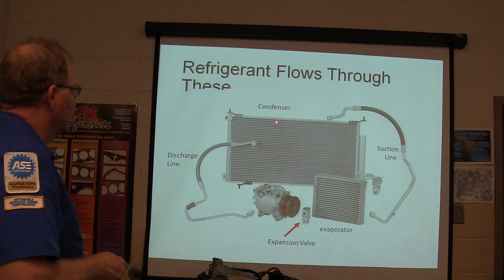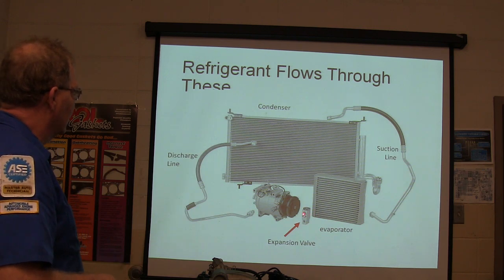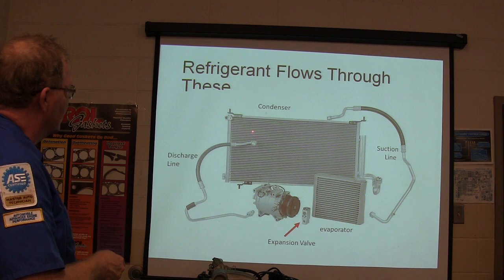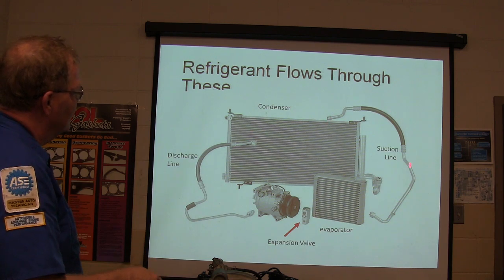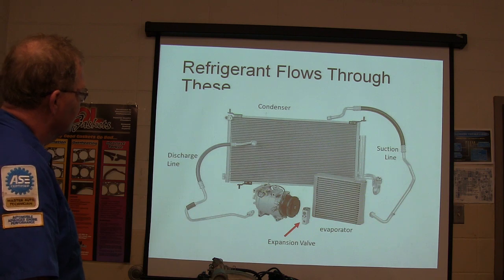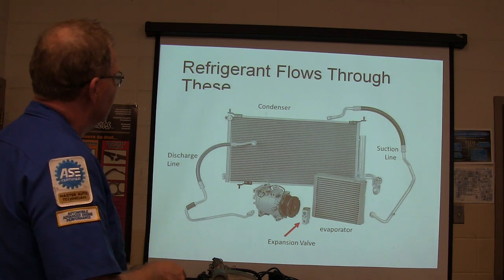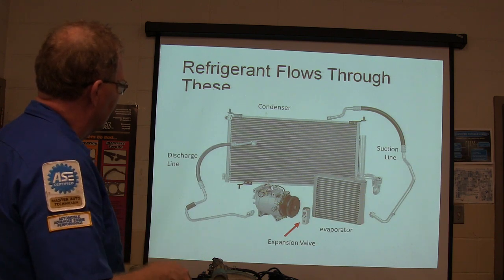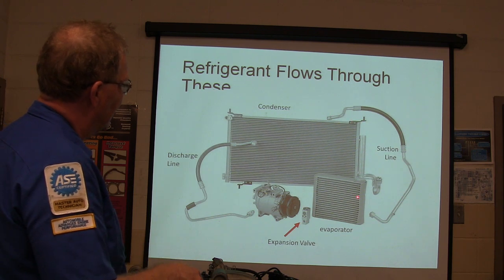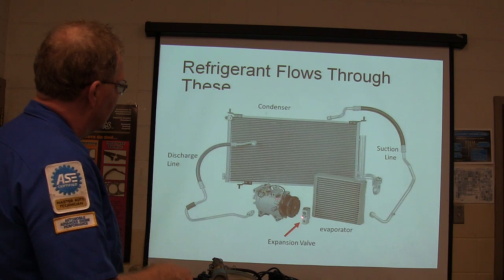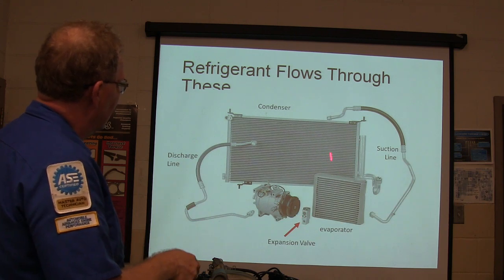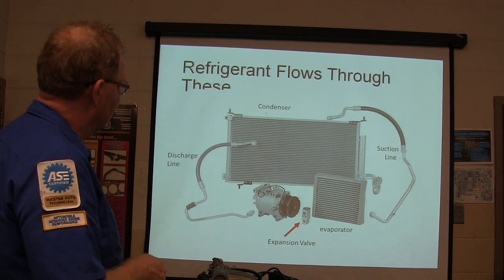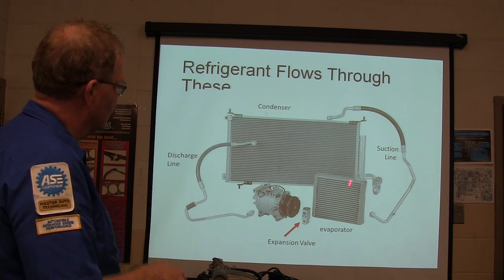The refrigerant flows through: condenser, suction line, evaporator, expansion valve, and the discharge line. The discharge line is between the compressor and the condenser. The suction line goes through the evaporator and back to the compressor. What I see missing off the diagram is a liquid line — from the condenser to the evaporator — that's not pictured here.